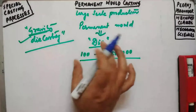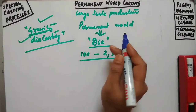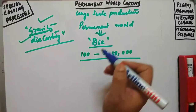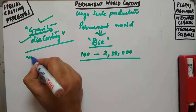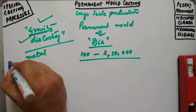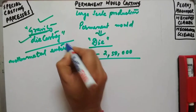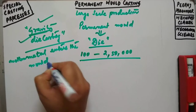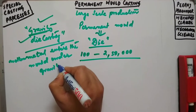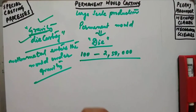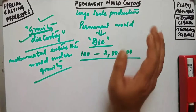Why is it called gravity die casting? The permanent mold is known as a die. It is called gravity because in this particular process the molten metal enters the mold due to gravitational force. That is why it is known as gravity die casting.